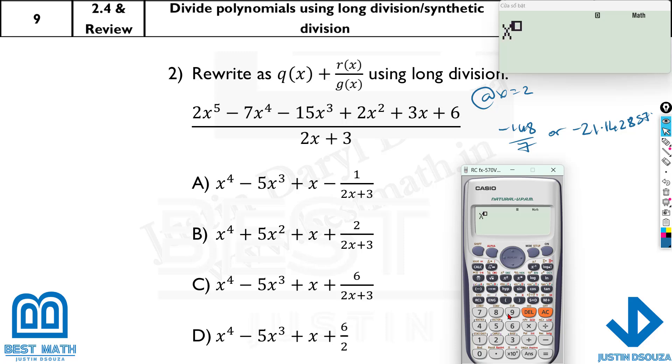Now, let me try x^4 minus 5x^3 then we have plus x minus 1 by 2x plus 3. This is the remainder, last part. Now, calculate it at 2. It's minus 1. No, it's not the same. It's close, but not the same. So, let me try the next one.